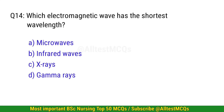Q14. Which electromagnetic wave has the shortest wavelength? The correct option is D: Gamma rays.